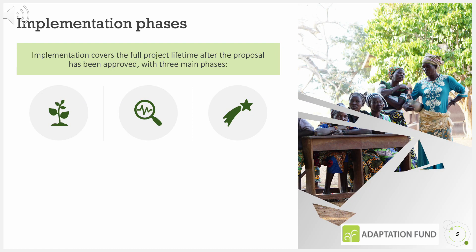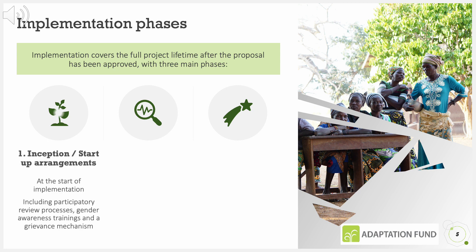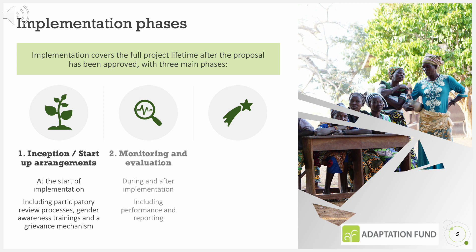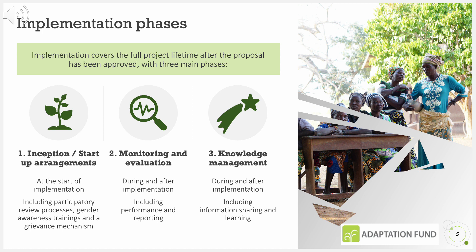Implementation covers the full project lifetime after the proposal has been approved, with three main phases. First, start-up arrangements at the start of implementation including participatory review processes, gender awareness trainings and setting up a grievance mechanism. Second, monitoring and evaluation during and after implementation including performance and reporting. And third, knowledge management during and after implementation including information sharing and learning. In the next sections, each phase will be covered in more detail.